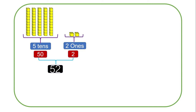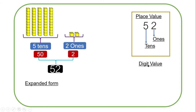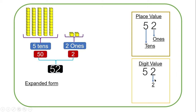The whole number will be 52. Now let us see how we can write the place values and digit values. In the number 52, the place value of two is ones, and the place value of five is tens. The digit value of two is two — that is two times one, which is two. The digit value of five is 50 — that is five times ten, which is 50.